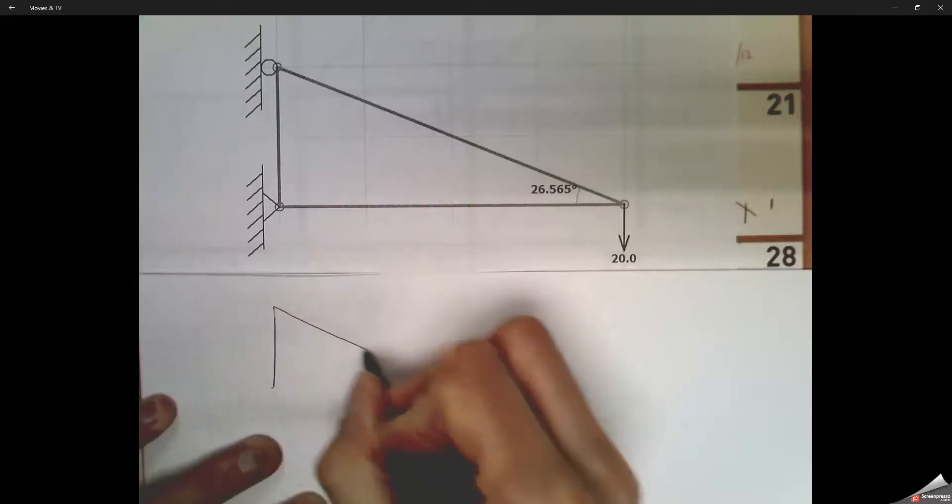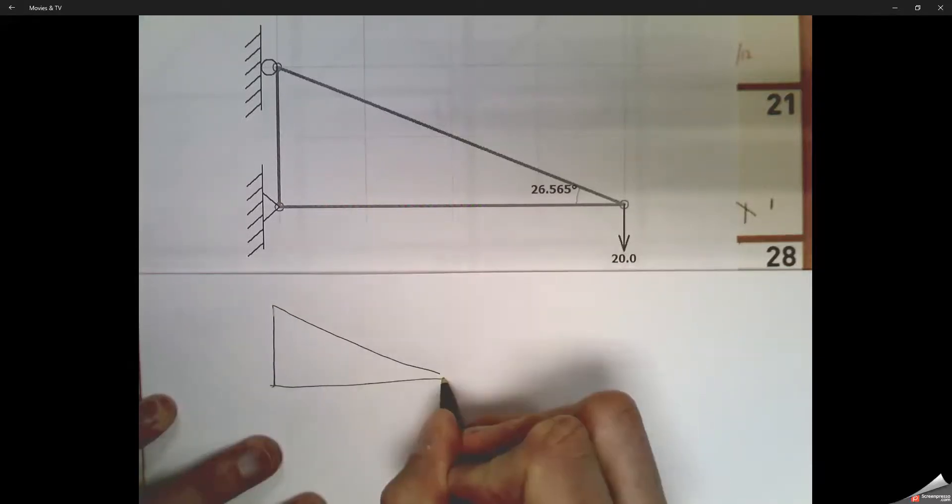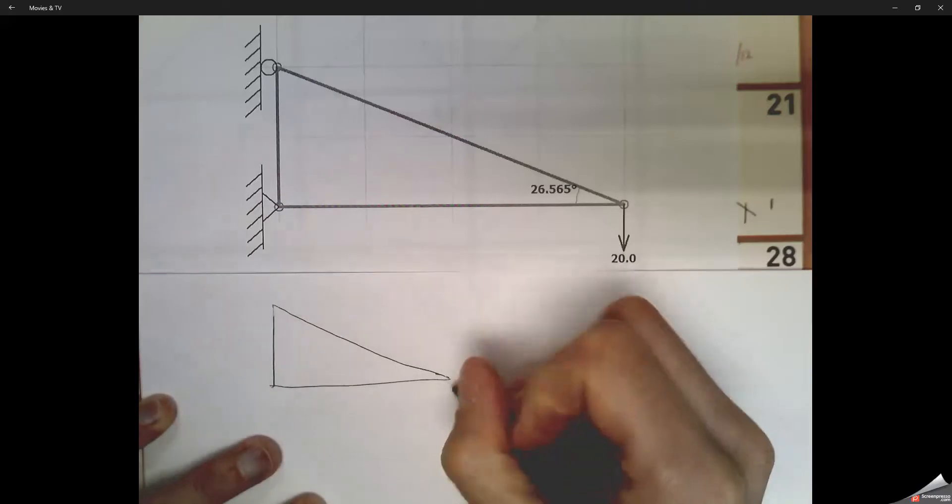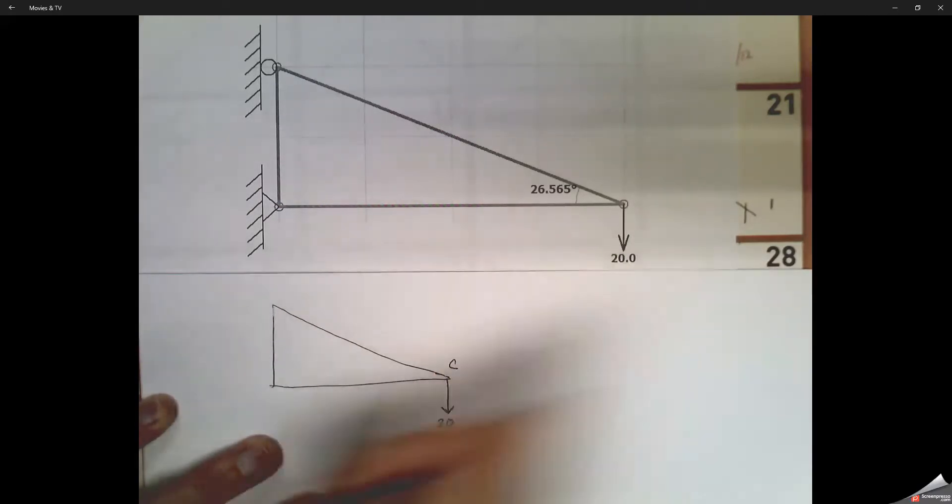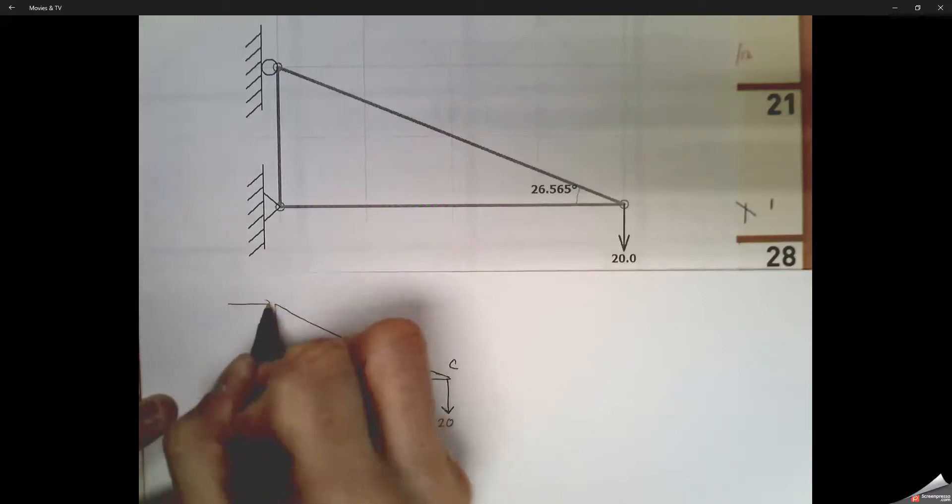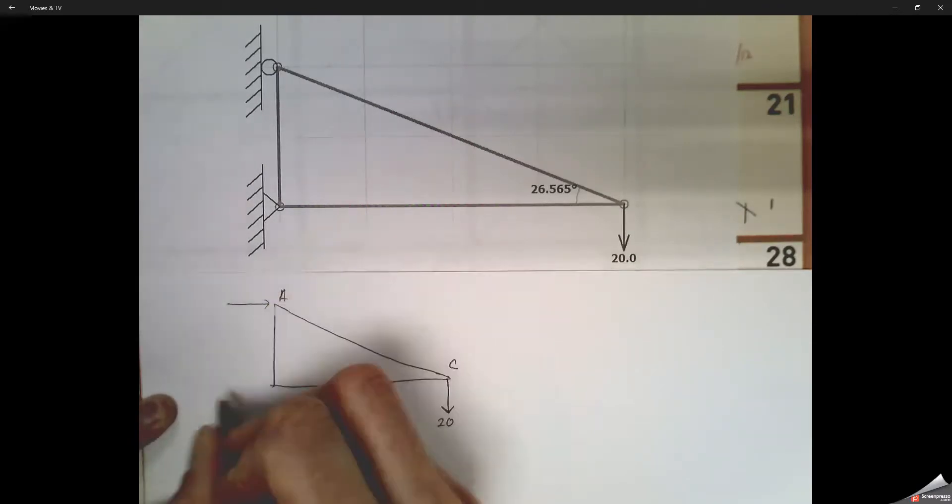All right, so here we're looking at simple trusses, question number one. We're given the truss with a pin and a roller at a 26.565 degree angle and a force at pin C of 20 units.